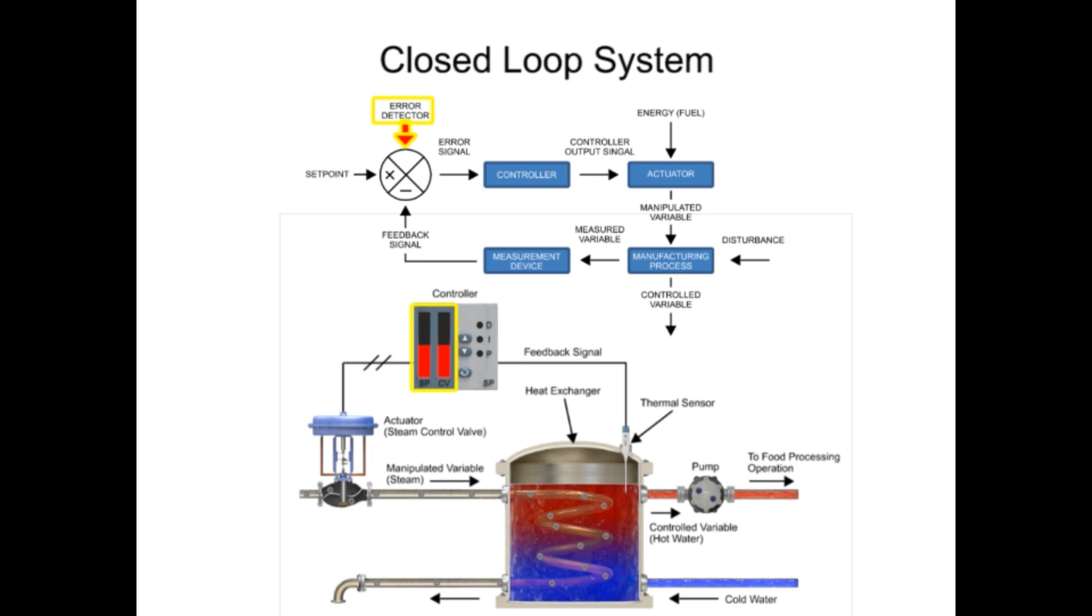Error detector compares the set point to the feedback signal and produces an output proportional to the difference between them. Error signal is the output of the error detector. If the feedback signal and set point are equal, the error signal is zero.